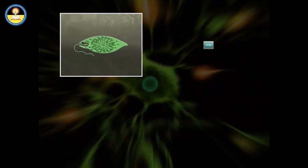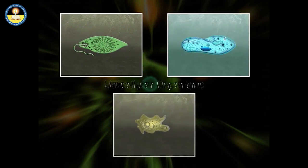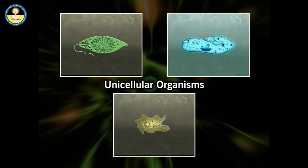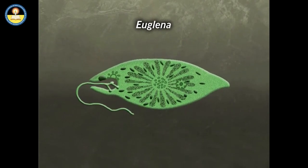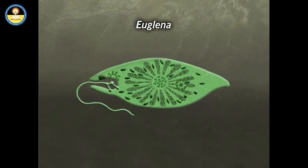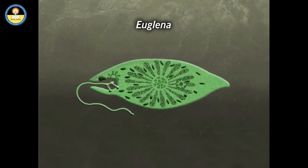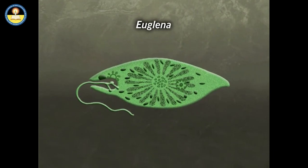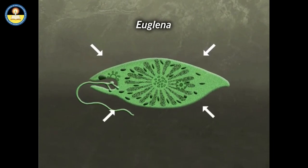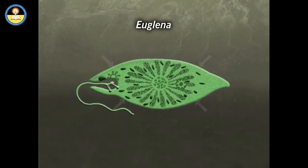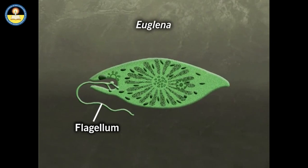There are some organisms composed of only one cell, known as unicellular organisms. They carry out all their functions within a single cell. Euglena is a single-celled microscopic alga — a unique organism that has chloroplasts and can make its own food. It is not completely autotrophic, as it can also absorb food from its environment. Euglena moves by a flagellum, a long whip-like structure that acts like a little motor.